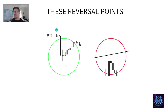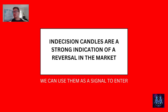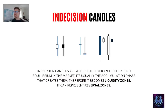Here are more examples of these reversal points. Price makes its way down, clearly shows these dojis. These are strong indicators showing us that point where the retailers made a mistake and the institutions are getting in. Indecision candles are a strong indication of a reversal in the market — we can use them as signals to enter. These are candles where the buyers and sellers find equilibrium in the market. It's usually the accumulation phase that creates them, and therefore they become liquidity zones — they represent reversals.